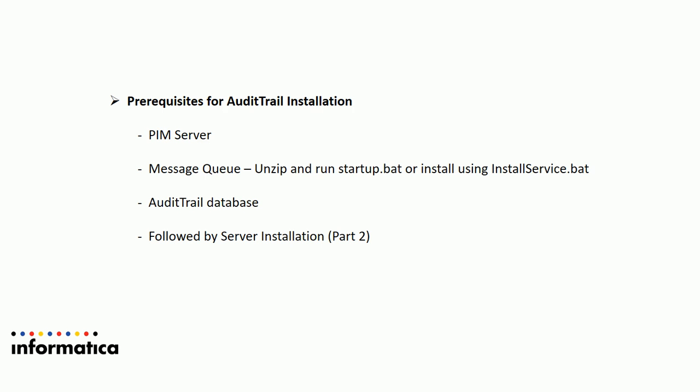Prerequisites for audit trail installation: first, you need a PIM server running, to which you will connect a PIM client. Next is the message queue, which acts as a bridge between the PIM server and the audit trail database. If the PIM server goes down after a data modification, the message will be sent to the message queue first, and then dequeued to the audit trail database once the server is back up. The message queue installation is covered in part 2 — it is a single step of unzipping and running the startup.bat file, or installing it as a service using the install_service.bat file.